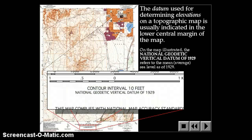The datum is located at the bottom of the map, lower center. You have a contour interval and underneath that it will tell you what the datum is. And this is the average sea level in 1929, the zero that this map is measured from.